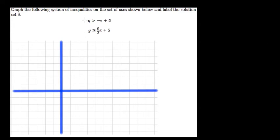And then let's graph the first one. Y is greater than negative x plus 2. Think of mx plus b. The plus 2 here is the y-intercept. So we have plus 2 and then negative x. That means the slope is negative 1 or you can think of that as negative 1 over 1.